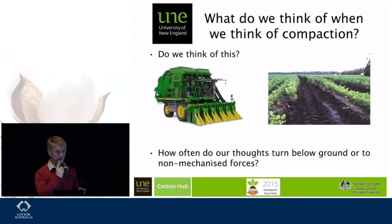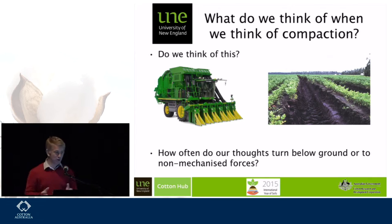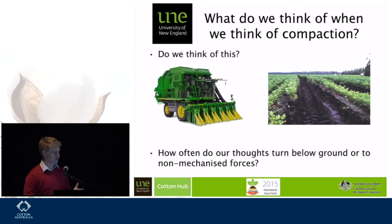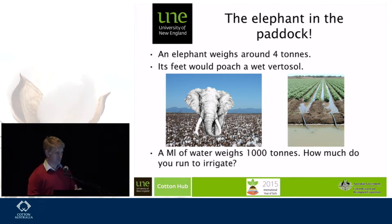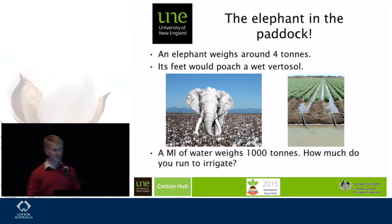When you think of compaction, you think of that big green and yellow thing wandering through your field knocking the crap out of your soil — great, of course it's harvesting cotton, making your money. You think of wheel ruts. But you don't often turn your thoughts to what's happening below ground. I want you to do that, because I think we've also got a compaction problem that's not just from mechanisation. There's an elephant in your paddock and you're ignoring it — some of you at your peril.